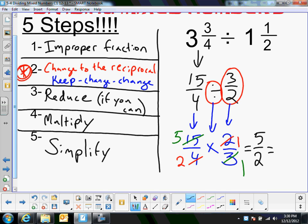You want to look to see, did I miss anything to reduce? You've got to reduce it again if you can. I can't reduce this again, but I can turn this into a mixed number because the top number is bigger than the bottom. So 2 goes into 5 twice, and that makes 4. So there's 1 half left over. So those are the five steps to dividing mixed numbers.